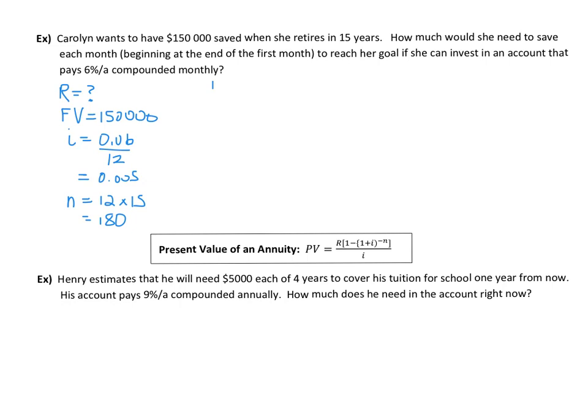So now we're ready to fill in what we know in our annuity formula here. So we have our (1 + i)^n - 1 all over i. So fill in what we know. We know the $150,000 is our future value. The R we don't know.